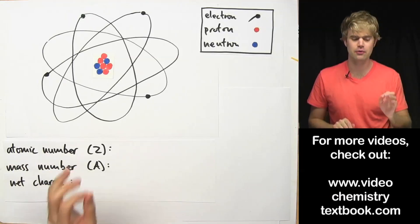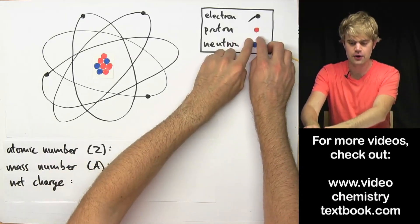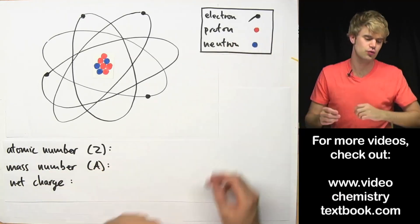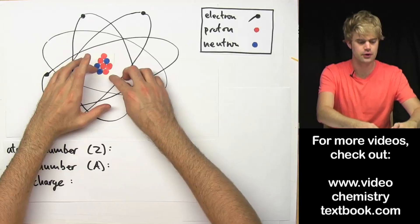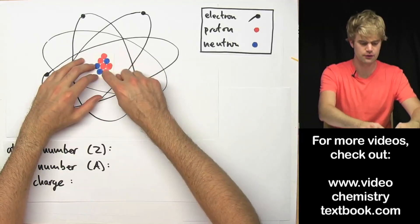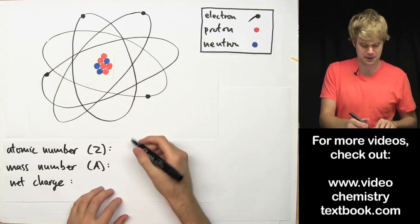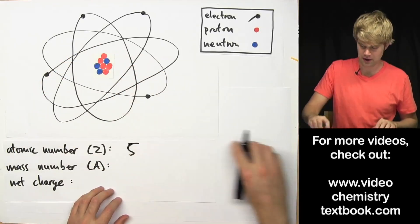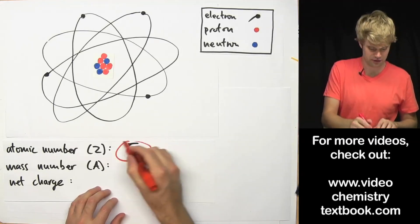So atomic number is the number of protons. In this diagram, these little red circles are representing protons here in the nucleus, so I've got 1, 2, 3, 4, 5 — which means my atomic number is 5. That was easy enough.